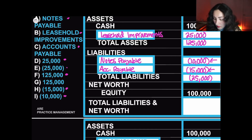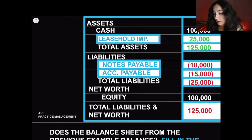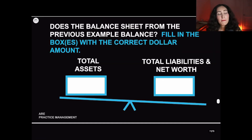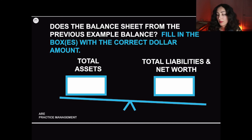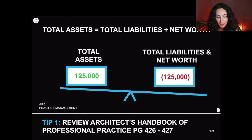We're left with $125,000 and one box remaining. If we did the math right, the $125,000 should go in total liabilities and net worth. We looked at which was considered an asset, which was a liability, and what's equity. Does the balance sheet from the previous example balance? Fill in the boxes with the correct dollar amount.